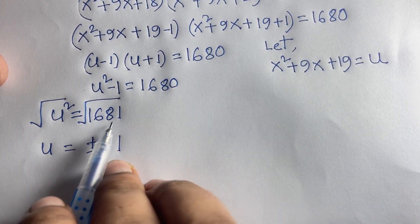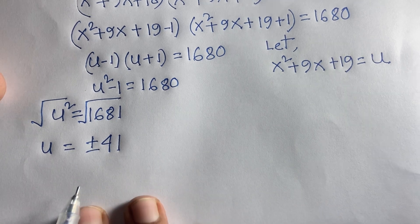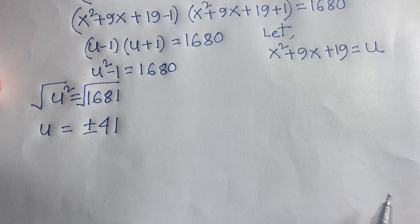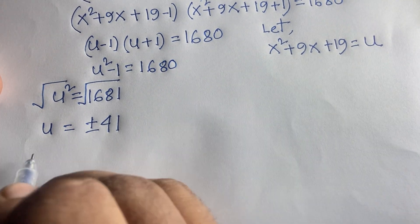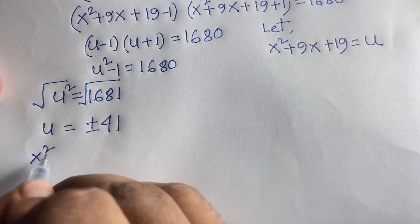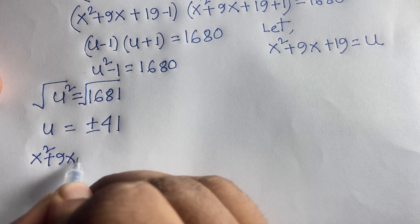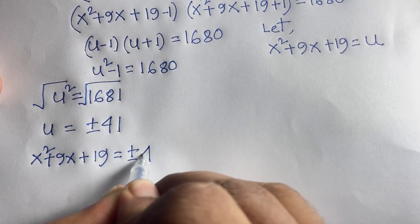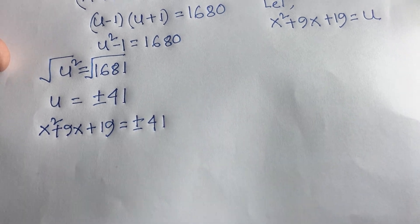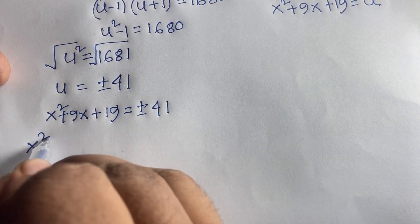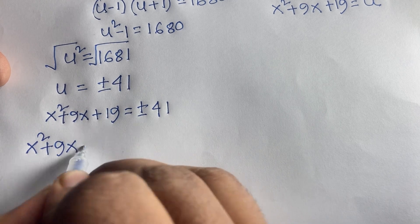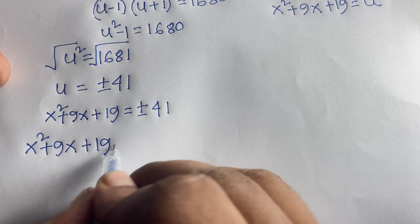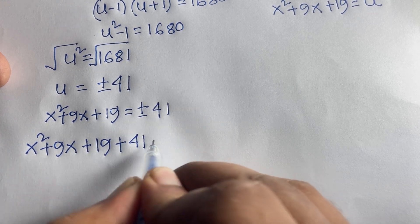Since u = x²+9x+19, we have x²+9x+19 = ±41, giving two cases. Case 1: x²+9x+19 = +41, and Case 2: x²+9x+19 = -41.